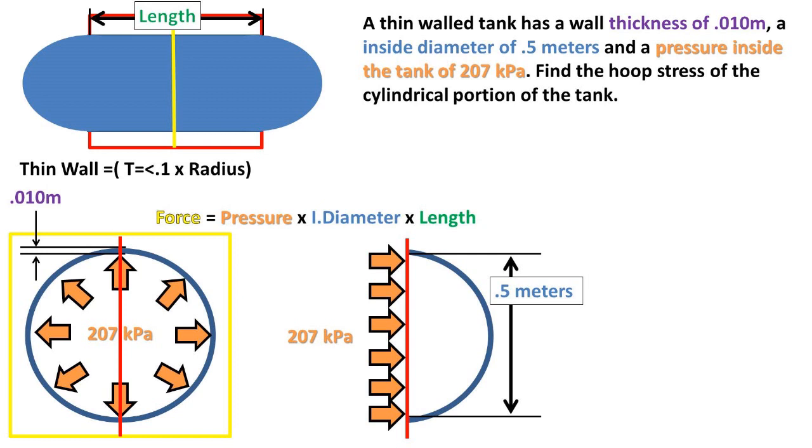So we will take the pressure of 207 kilopascals and multiply it times the internal pressure vessel diameter, and then multiply that times the length of the cylinder to get how much force is acting 90 degrees perpendicular to the cross-sectional plane.